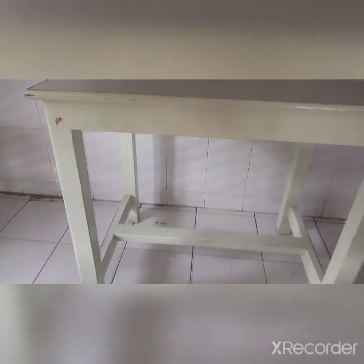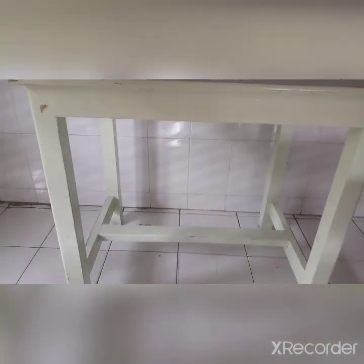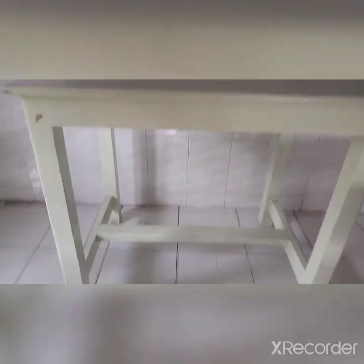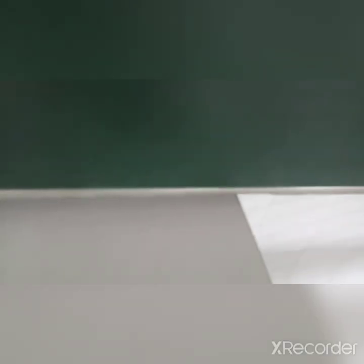Look at this table — this is the top view of the table. This is the front view of the table. Now we will change the side and see how the table looks from the side view. This is the side view of the table. Same for the green board — from the front it will look like this. This is the front view of the green board.